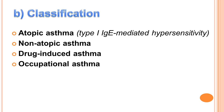Next, we move to the classification part. We have 4 types of asthma: atopic asthma, non-atopic asthma, drug-induced asthma, and occupational asthma. Tiếp theo, chúng ta đi đến phần phân loại. Có 4 loại hen suyễn: loại 1 là hen suyễn dị ứng, loại 2 là hen suyễn không dị ứng, loại 3 là hen suyễn do thuốc và loại 4 là hen suyễn do nghề nghiệp.